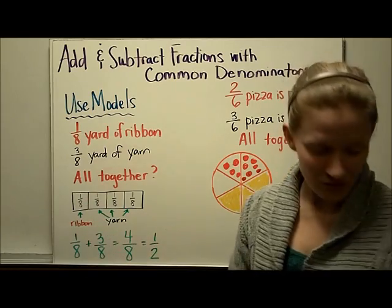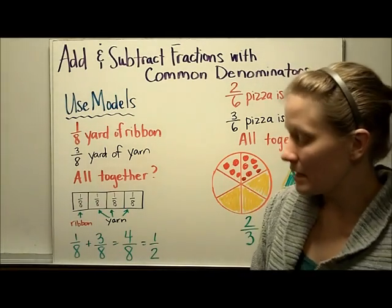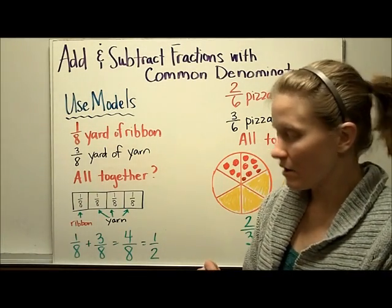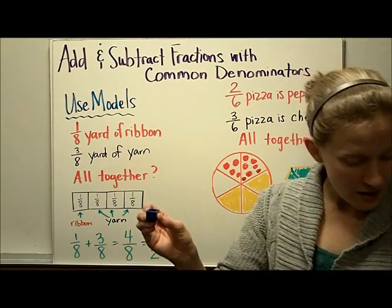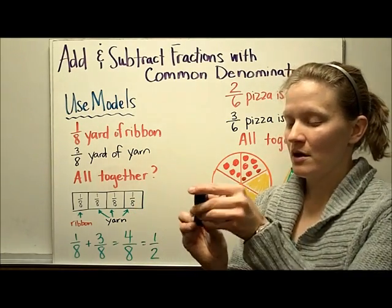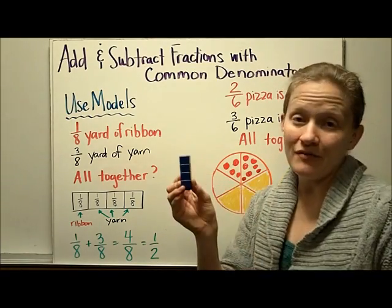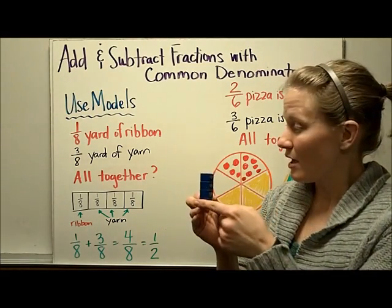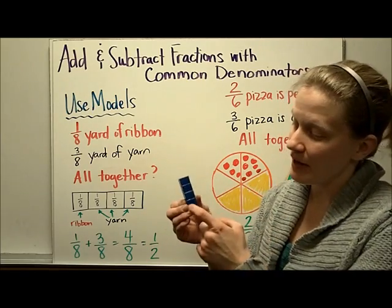you could model it with fraction towers. So you could take the 1/8 yard of ribbon and then add that together to the 3/8 yard of yarn, and then all you'd have to do is count and see what part of a yard you have all together.